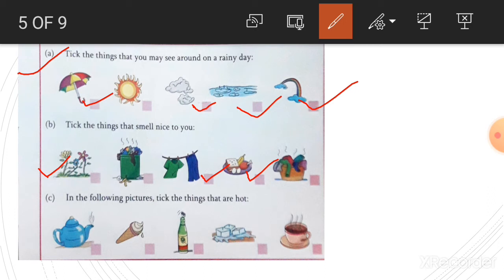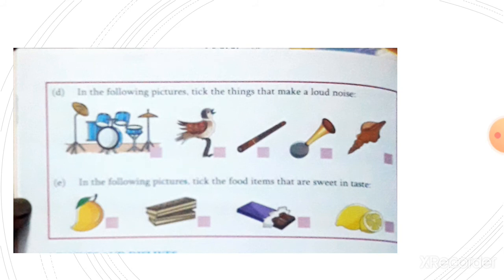In the following pictures, tick the things that are hot. This one is hot, this one is hot, and this one is also hot. And the remaining three are not hot. To feel whether a thing is hot or not, we use our skin.